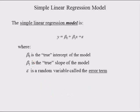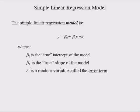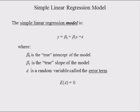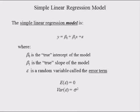Epsilon, the weird-looking E, is a random variable called the error term. We will never know the values of the error term, but we can estimate them with what we call residuals. The expected value of the error is equal to 0, and the variance of the errors is denoted sigma squared.